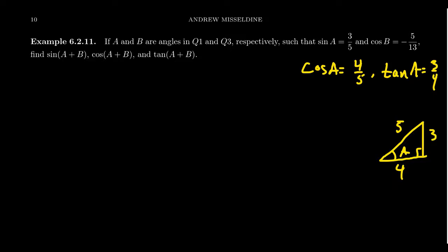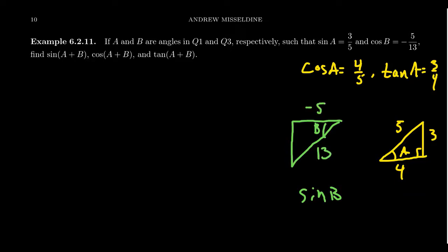Since we have cosine of B, what about sine of B? I drew the triangle upside down to indicate we're in the third quadrant. Using the reference angle for B in the third quadrant, cosine is negative 5 over 13 — the hypotenuse is always positive, but since we're in the third quadrant the x-coordinate is negative. By the Pythagorean equation the other side is 12, but in the third quadrant the y-coordinate is negative 12. So sine of B equals negative 12 thirteenths, and tangent of B equals 12 over 5, which is positive.